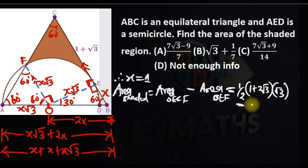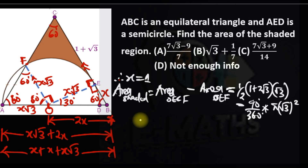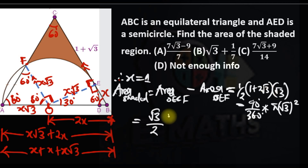Minus the area of the sector: the central angle is 90 degrees, so it's 90/360 times π times r squared. With r = √3, this gives (1/4)π × 3, which equals 3π/4. The trapezium area simplifies to (√3/2) × (1 + 2√3) = √3/2 + 3.